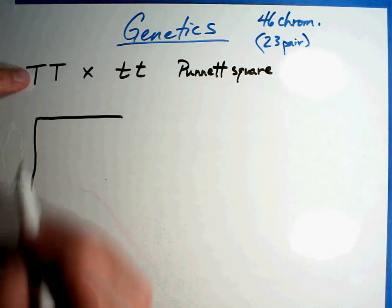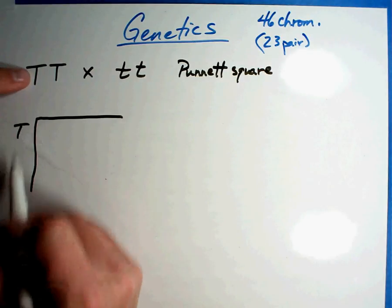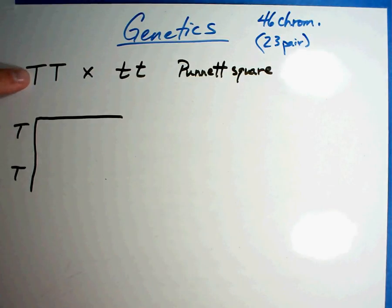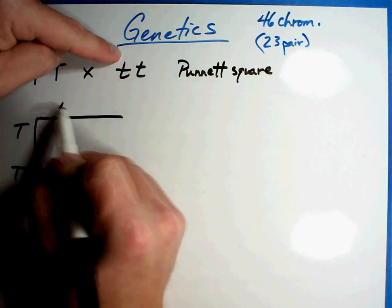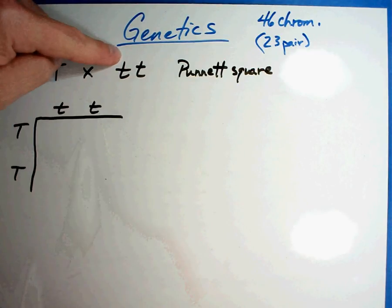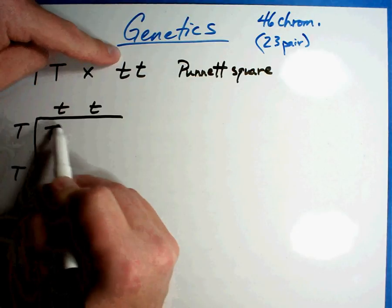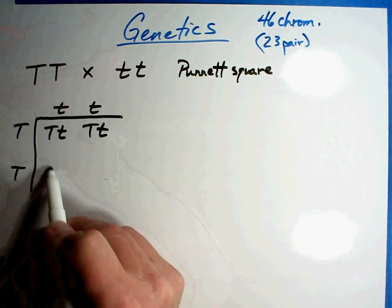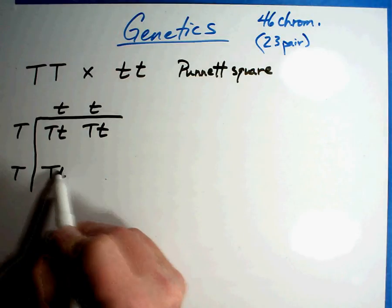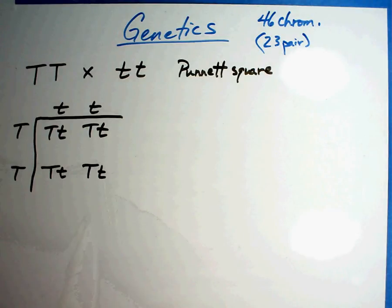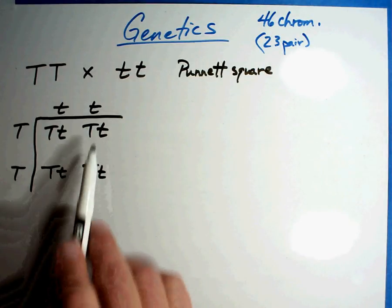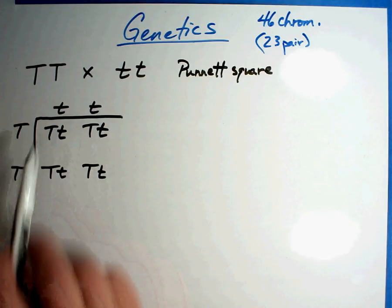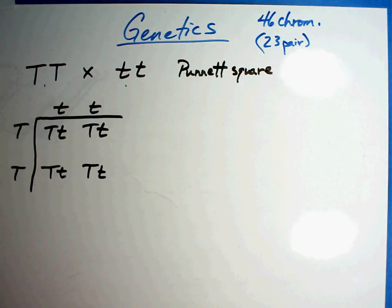With this parent right here, all you get is a big T or a big T — that's the only gene they can pass on. And this parent can only pass on their genes. The possible children are: big T little t, big T little t, big T little t, big T little t. These are all the possible children that could come from that parent and that parent.